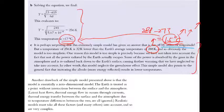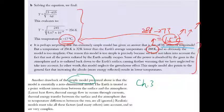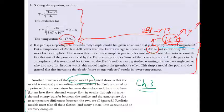This simple model connects to the kinetic model of ideal gases covered in Chapter 3. Physicists use simplified models that ignore many factors but still help predict behavior, making this a useful tool in astronomy as well.